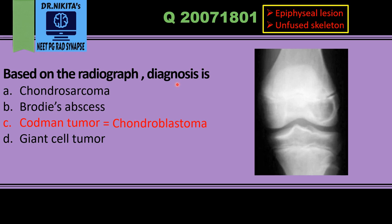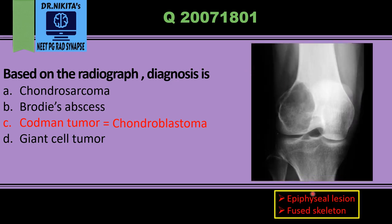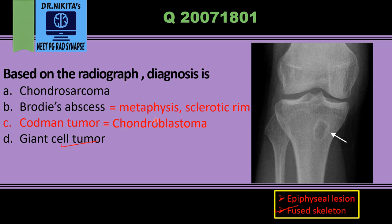If we see an epiphysis lesion in a fused skeleton — as shown here, where the lytic lesion is in the epiphysis region but the physeal plate is closed and the epiphysis and metaphysis are fused — it is a giant cell tumor. So the key difference: chondroblastoma is an epiphysis lesion in an unfused skeleton, while giant cell tumor is an epiphysis lesion in a fused skeleton.